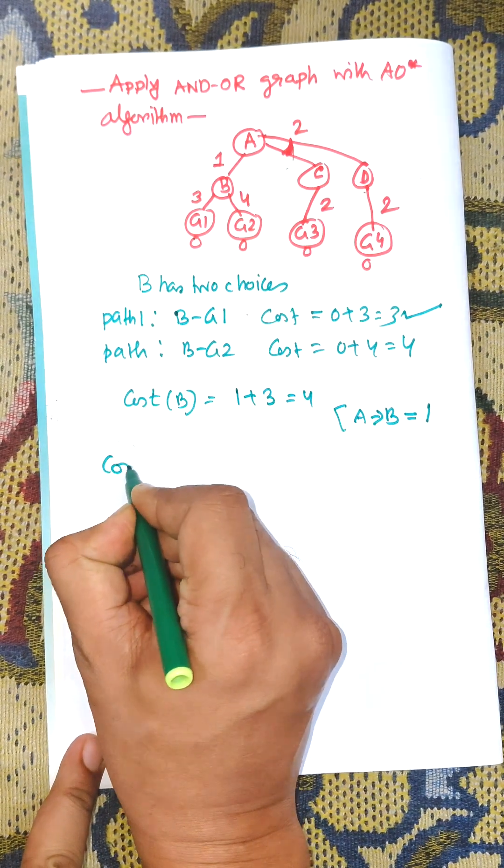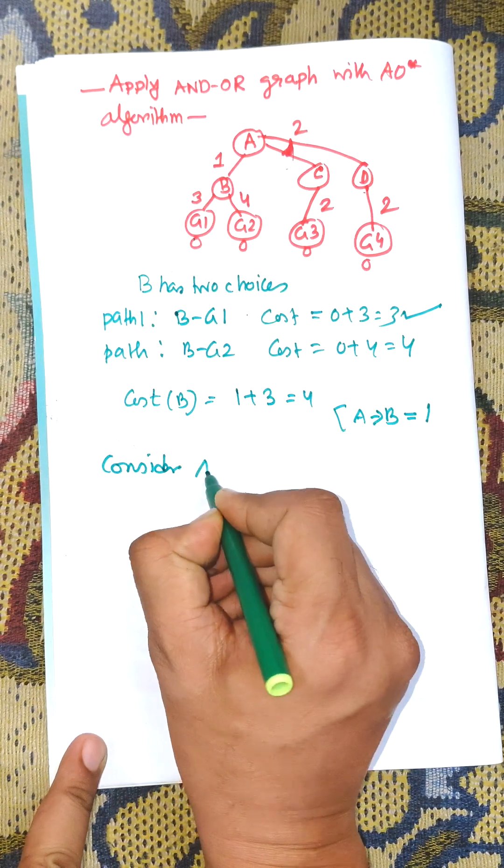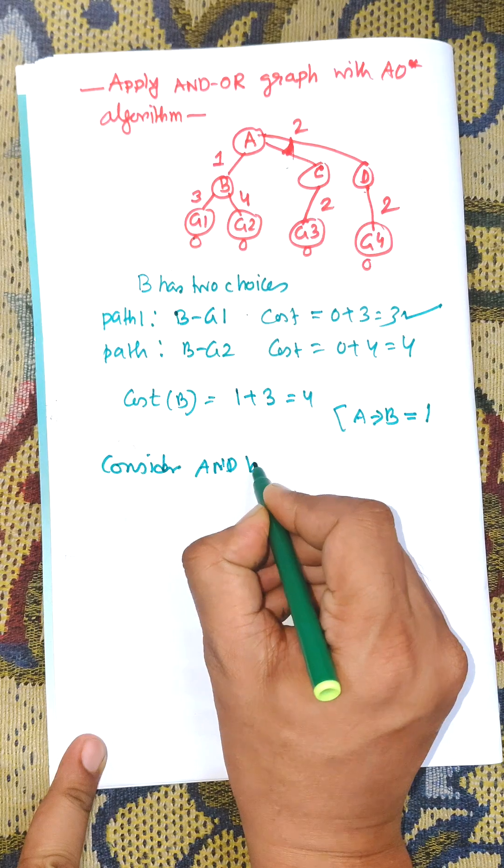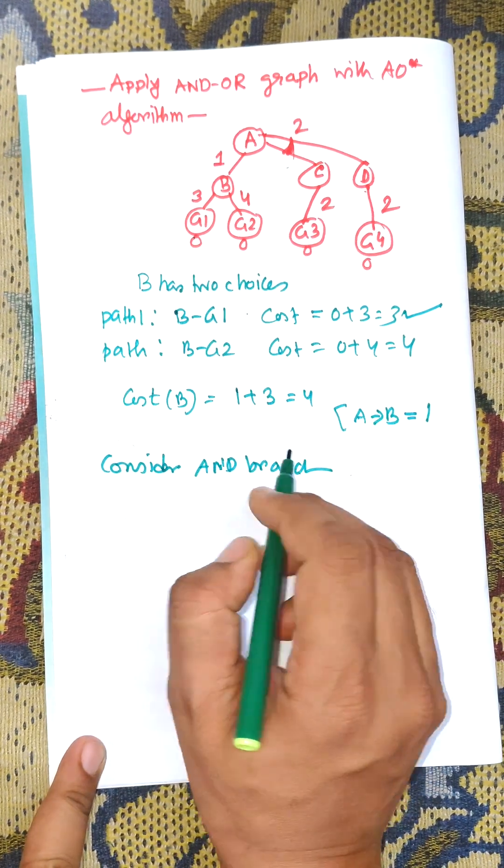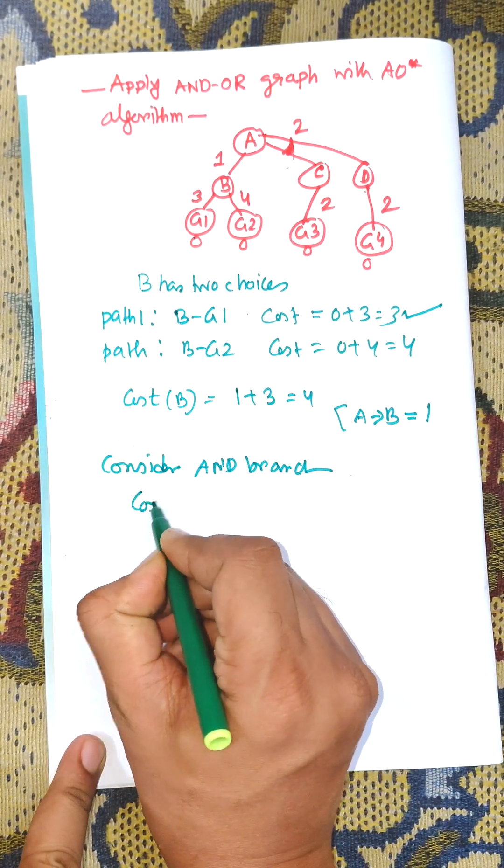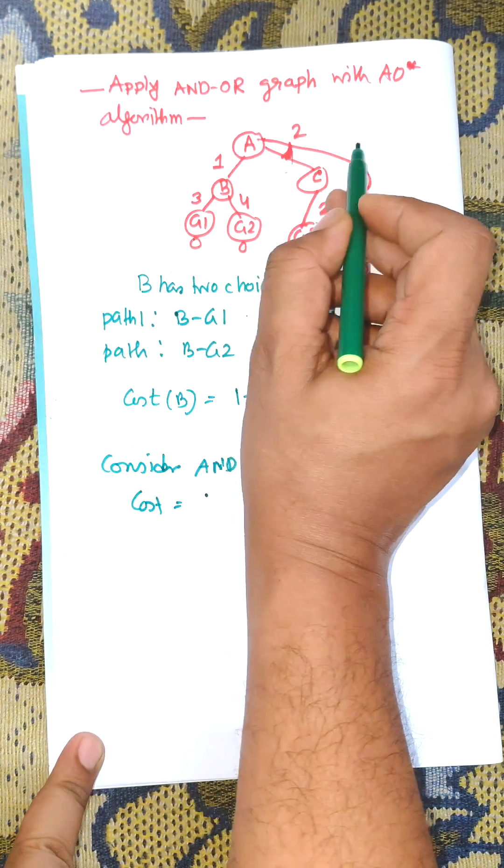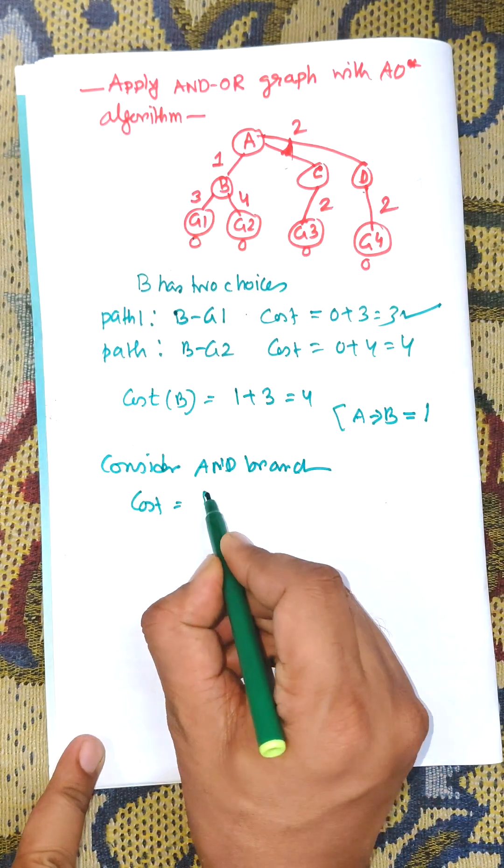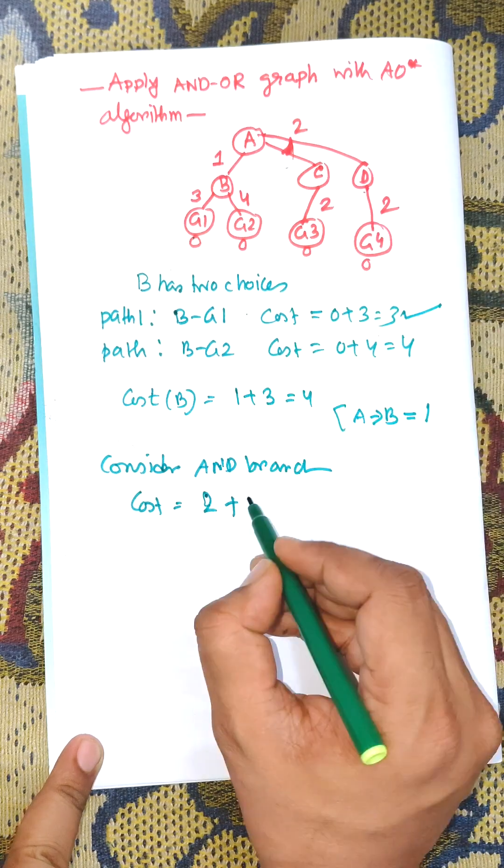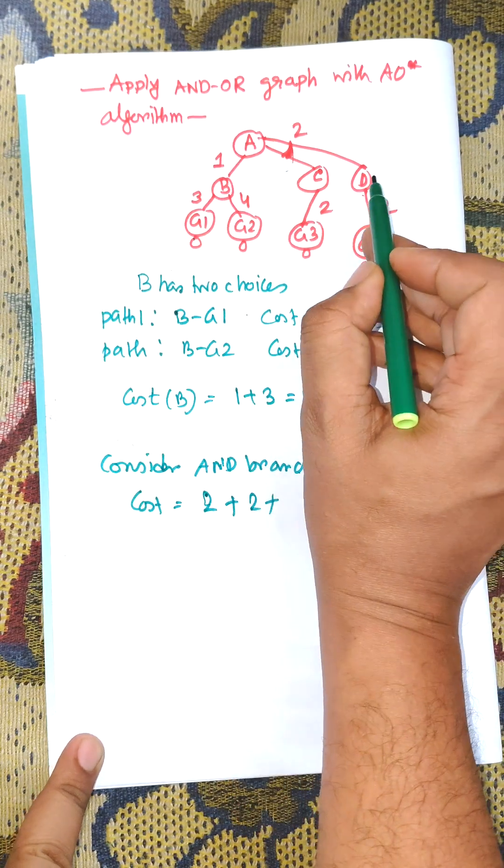Now consider AND branch. Cost equal to cost of A to C D. Cost of A to C D is 2, and C to G is 2.